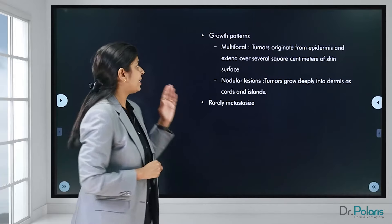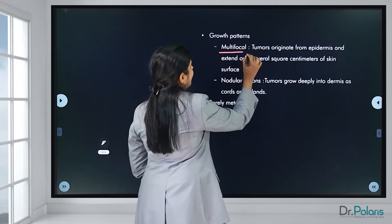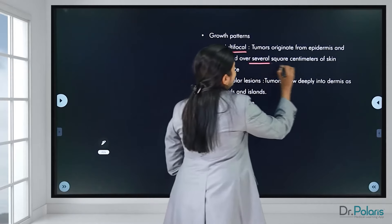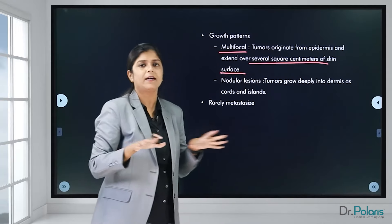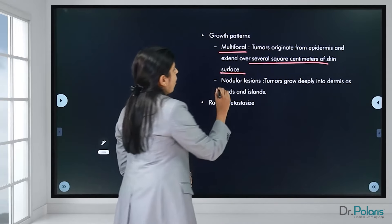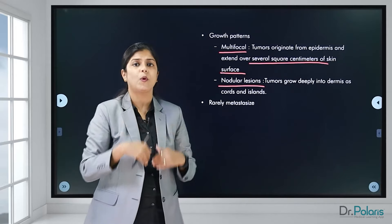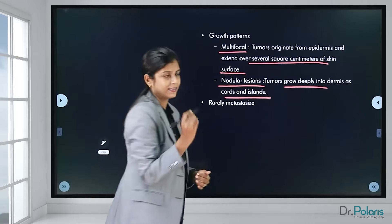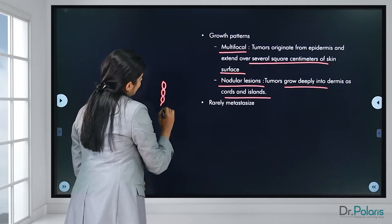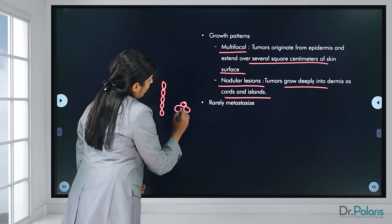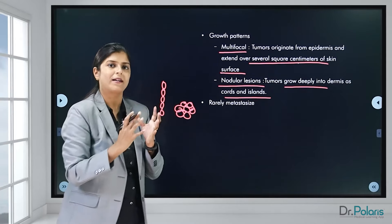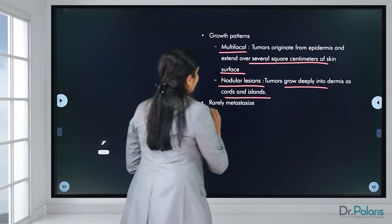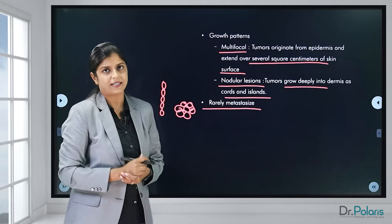Growth patterns of basal cell carcinoma include multifocal lesions — originating in the epidermis and spreading over centimeters of skin surface — and nodular lesions that grow deeper into the dermis as cords (single-file growth) or islands (cluster growth). Metastasis is very rare in basal cell carcinomas.